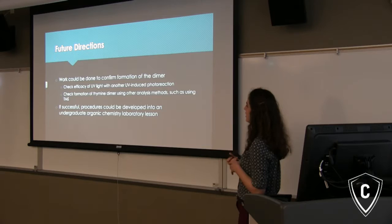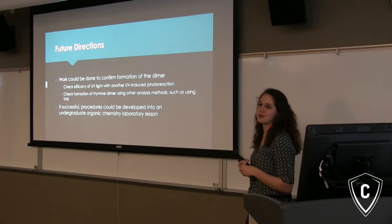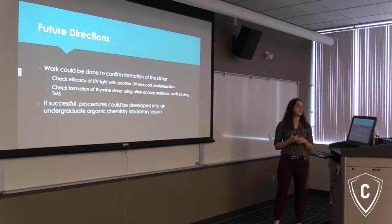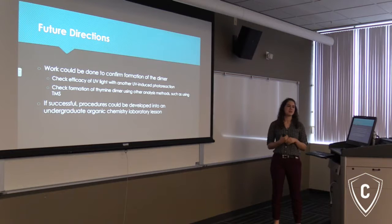For future directions for the research, what could be done is to confirm whether our dimer was actually being formed, since we weren't able to see it — we don't know if our reaction wasn't working or if our UV light wasn't working. And if successful, we hope that our procedures could be developed into an undergraduate lab so they can be used in our organic chemistry class here at Concordia.